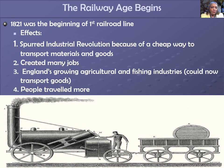First, railroads spurred industrial growth by giving manufacturers a cheap way to transport materials and finished products. Second, the railroad boom created hundreds of thousands of new jobs for both railroad workers and miners, who provided the iron for the tracks and the coal for the steam. Third, railroads boosted England's agricultural and fishing industries, which could now transport their products to distant cities. Finally, by making travel easier, railroads encouraged country people to take distant city jobs, and also lured city dwellers to resorts in the countryside. Like a locomotive racing across the country, the Industrial Revolution brought rapid and unsettling changes to people's lives.